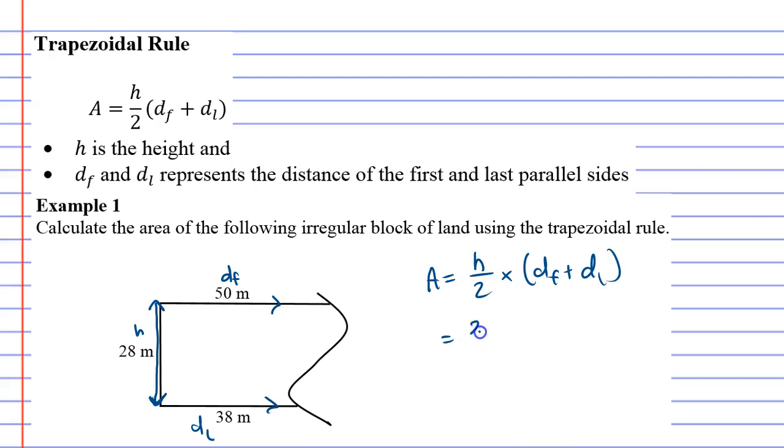h is 28 over 2, and we've got 50 plus 38. 28 over 2 is 14, and 50 plus 38 is 88.